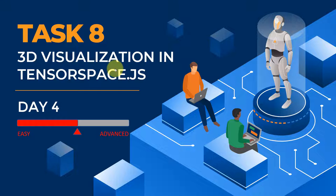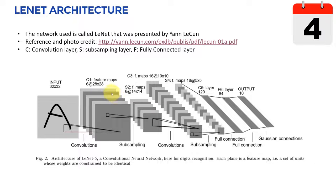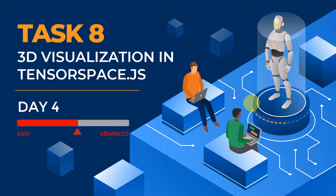Hello everyone and welcome to Task 8. In this task we're going to perform 3D visualizations using TensorSpace.js. This lecture is intermediate level difficulty. If you remember from Task 7, we covered the LeNet convolutional neural network — LeNet has a feature detection convolution layer first, followed by down-sampling, then another convolution, another down-sampling, a dense fully connected neural network, and finally an output containing 10 outputs for digits 0 to 9.